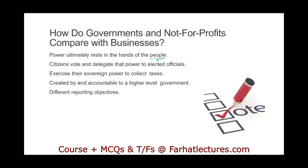The power ultimately rests in the hands of the people when it comes to government, and in the hands of stockholders in a business. Citizens vote and delegate that power to elected officials. The government exercises its sovereign power to collect taxes — if they want more revenue, they can raise taxes. That would be great if businesses could do the same, but they can't. Voters will have to pay that tax, and if they don't like it, they can vote out the officials next term. Businesses generate revenue by providing goods and services.